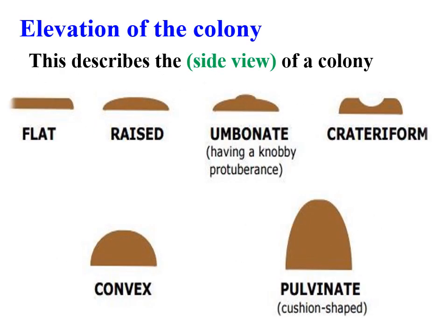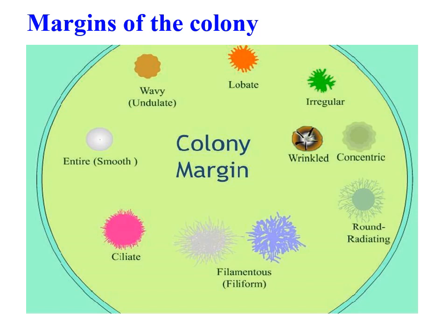The elevation of the colony also differs from one bacterial colony to another — sometimes it appears flat, raised, umbonate, crateriform, convex, or pulvenate. The margins of the colony — entire smooth, lobate, irregular, ringed, wrinkled, centric, wavy, round, filamentous — many types of margins appear in a colony.